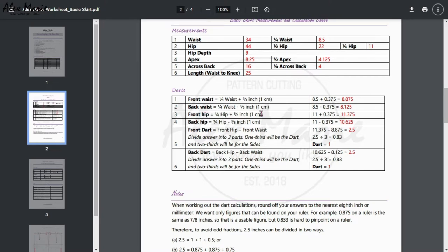Now when we get to the front dart, you're going to take your front hip minus your front waist, which we've already calculated here. That will give you an answer, and then you're going to divide your answer into three parts. One-third is going to be used for the darts and two-thirds will just be whatever is left. So 2.5 divided by 3 gives me this figure.